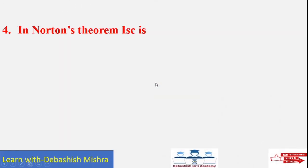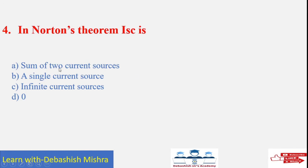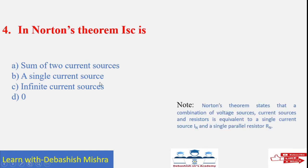In Norton's theorem, ISC is equivalent to: sum of two current sources, a single current source, infinite current source, or zero. Norton's theorem states that a combination of voltage sources, current sources, and resistors is equivalent to a single current source and a single parallel resistor. So the answer is B: a single current source.